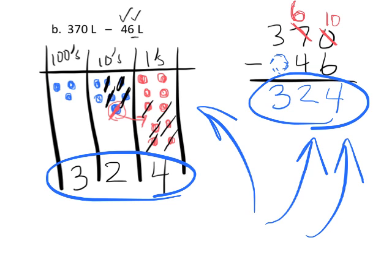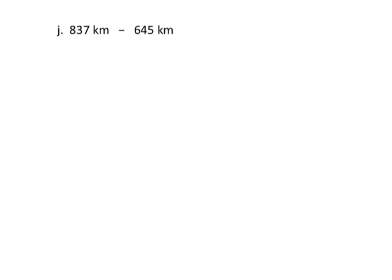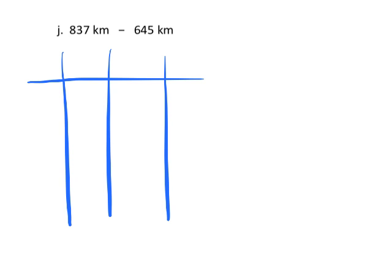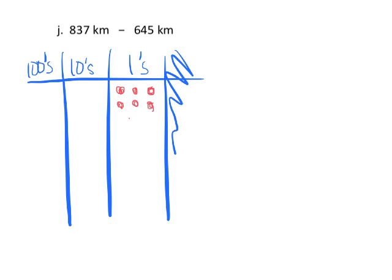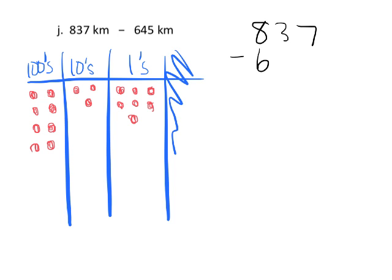Let's practice another example. We'll start with the number disks on a place value chart with hundreds, tens, and ones. We're going to model 837: 1, 2, 3, 4, 5, 6, 7 ones, then 10, 20, 30 for the tens, and 1, 2, 3, 4, 5, 6, 7, 8 hundreds. There's our 837, and we need to subtract 645 from it.